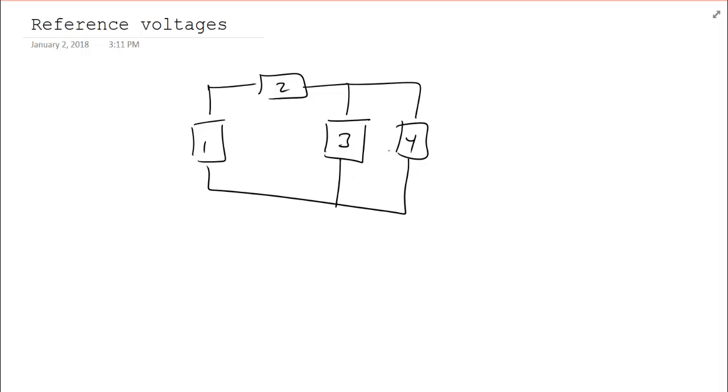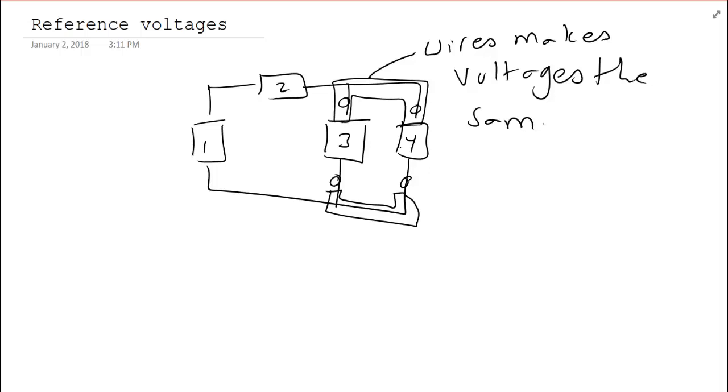This is the circuit from last time, and we claim that element 3 and element 4 shared the same voltage. Let's formalize that a little bit. Do you notice how the terminals of element 3 and 4 are connected to each other via a wire? This means that any wire makes voltages the same at the point of connection, which is called a node.